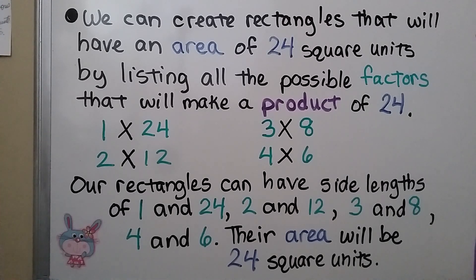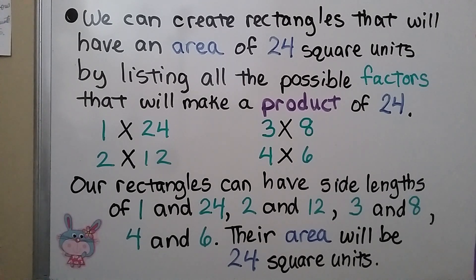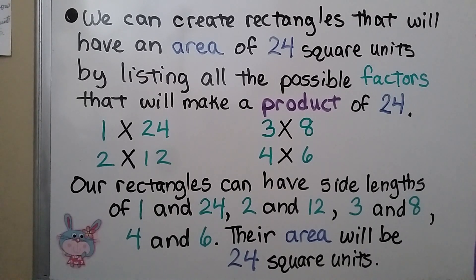We can create rectangles with an area of 24 square units by listing all factor pairs that give a product of 24: 1×24, 2×12, 3×8, and 4×6. Those all equal 24. That area is one side length multiplied by the other — length times width. So our rectangles can have side lengths of 1 and 24, 2 and 12, 3 and 8, or 4 and 6, and the area will be 24 square units.